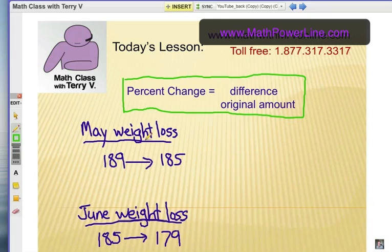Let's say that you've been trying to lose some weight and in May you measured at the beginning of the month and at the end of the month, and you had 189 pounds down to 185. Well obviously this is going to be a percent decrease. You had a pretty successful month there. You want to know how does this compare with June when you went from 185 to 179.